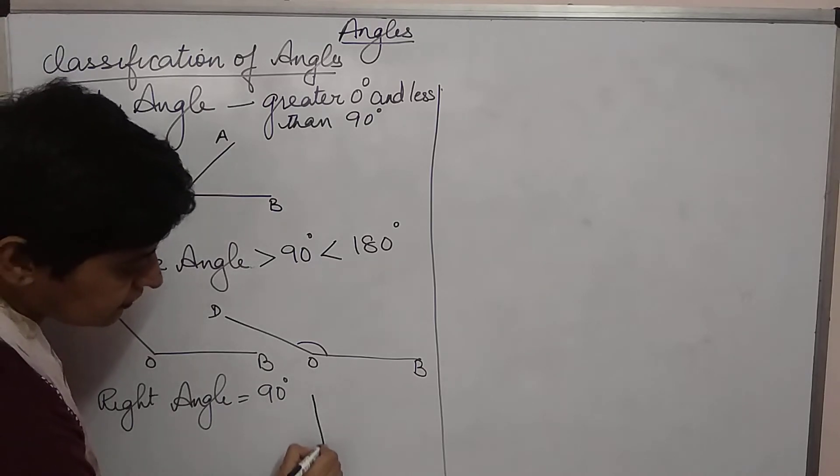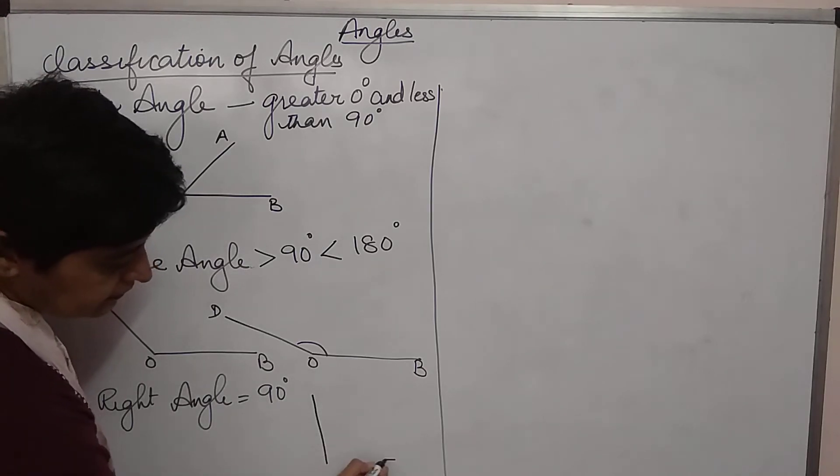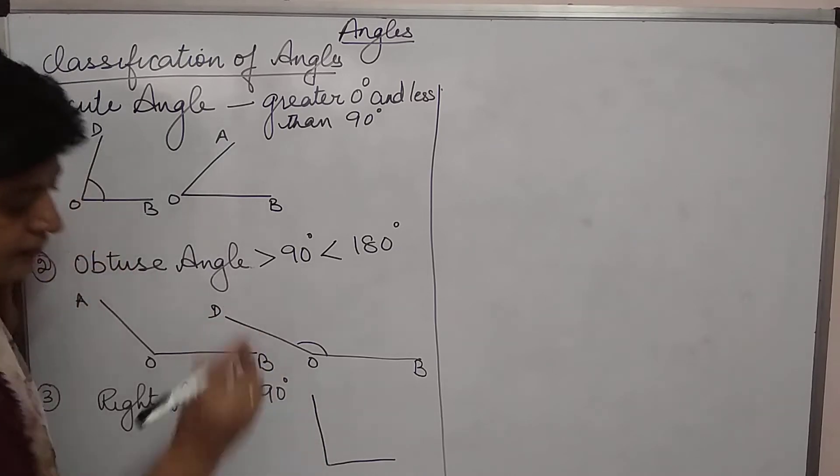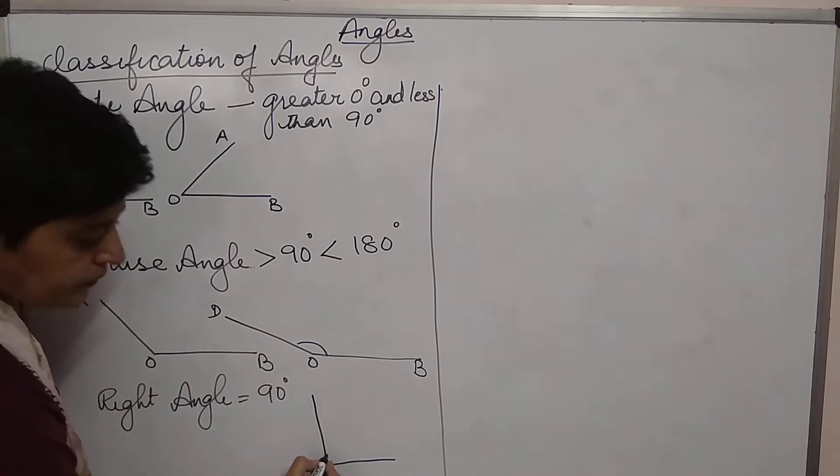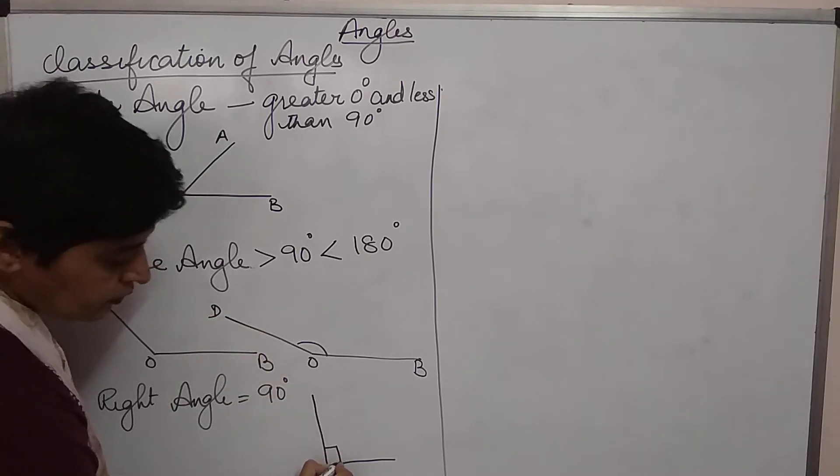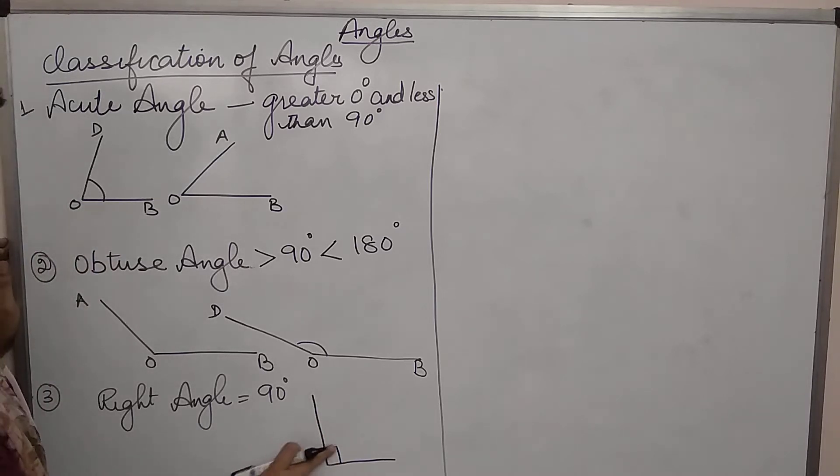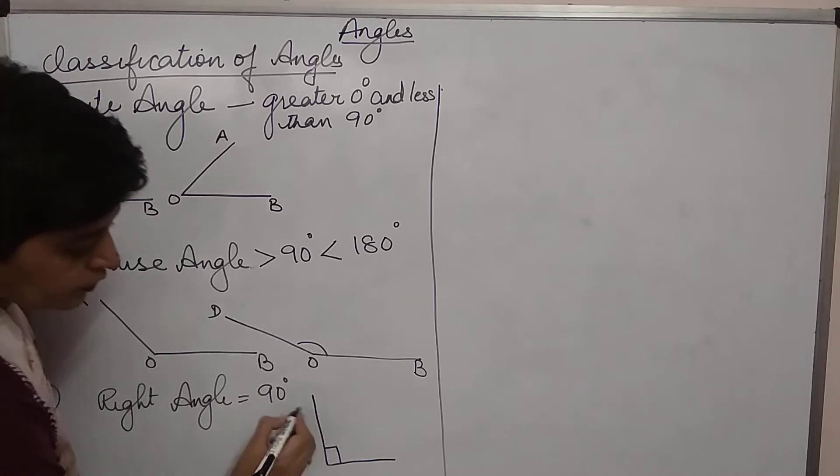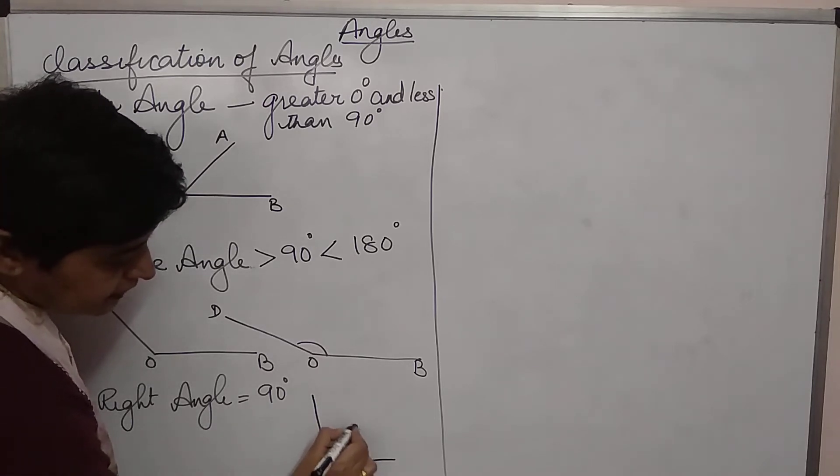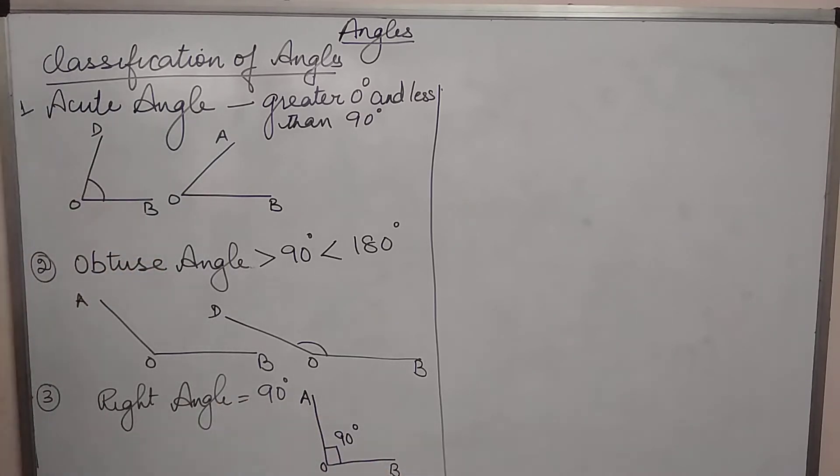and we demarcate it by putting a square rather than a circle, we write it like this. So, this is equal to 90 degree and the angle AOB is equal to 90 degree.